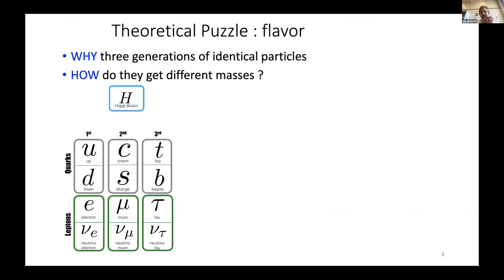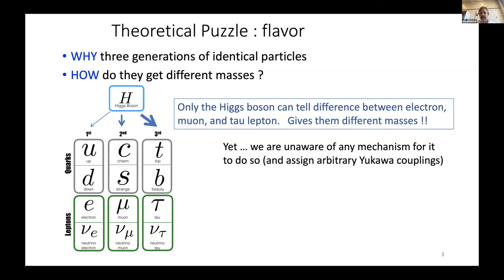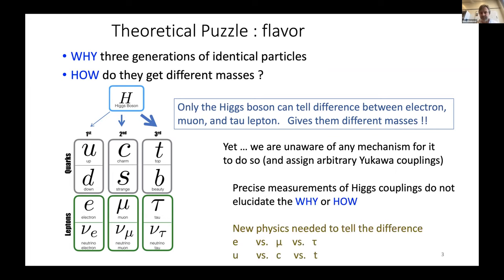Another theoretical puzzle is that we've got three generations of identical partners, but they get different masses because of their interaction with the Higgs boson. The Higgs boson gives less mass to the first generation and more to the second and third, with different masses for each particle. Only the Higgs boson can tell the difference between the electron, the muon, and the tau — there's no other coupling or difference. We don't know why. We just put in arbitrary Yukawa couplings for each fermion, but these don't explain why or how. We need some new physics that can tell the difference between an electron, a muon, and a tau, or between an up, charm, and top quark.